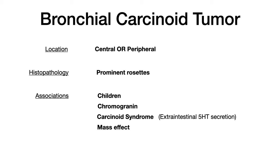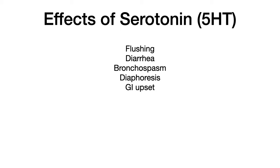Let me over-explain what a carcinoid tumor is and how they function, because there's a lot of confusion. Carcinoid tumors can exist in various locations — most in the GI tract, but a small percentage in the lungs (that's what we're talking about with bronchial carcinoid tumors). Regardless of location, they all share the common feature of being neuroendocrine tumors, comprised of neuroendocrine cells active in producing neuroendocrine chemicals — including serotonin, also known as 5-HT.